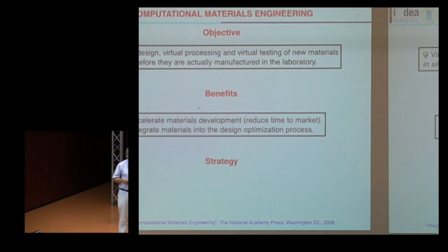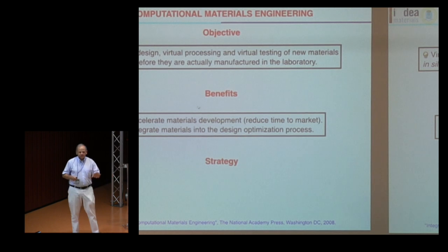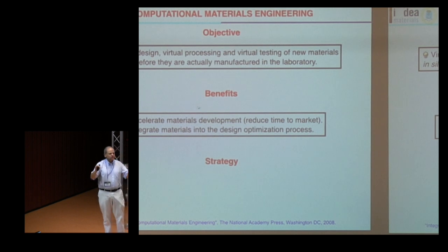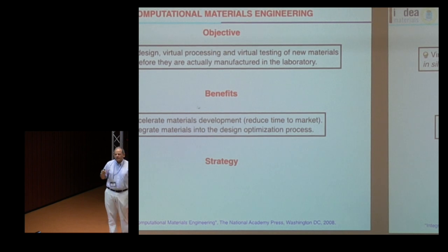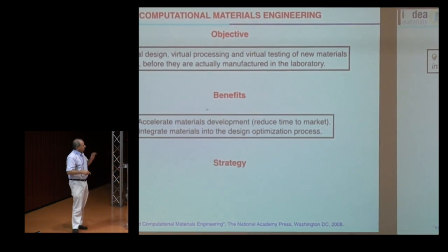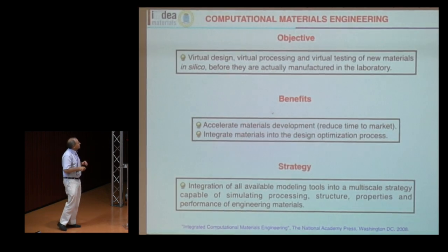Even if we design new materials by a trial-and-error approach, it will be much faster if we do it in the computer than with experiments. The second thing is that we will be able to integrate materials into the design optimization process. Nowadays, you design a new component using CAD tools, and when you come up with a final size, shape, and performance, you go and see what materials are available on the shelf. We very rarely optimize the materials microstructure for a given application.